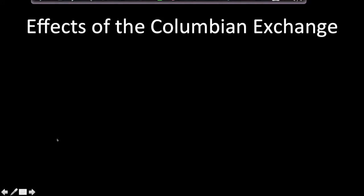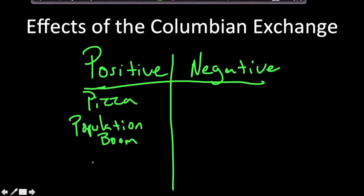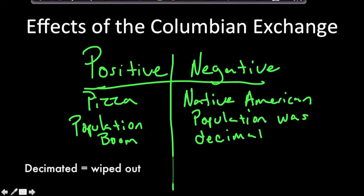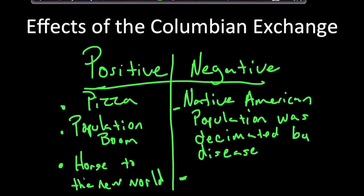Let's talk about the effects of the Columbian Exchange — both positive and negative. Positive effects included the population boom in Europe and the introduction of the horse and other animals to the New World. Negative effects included the decimation of the Native American population by disease. The Columbian Exchange also led to widespread slavery: all this new fertile land available for agriculture required hard labor, which eventually led to increased slavery — definitely a negative effect.